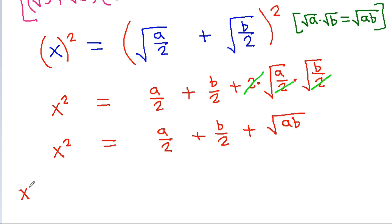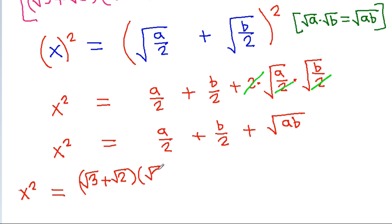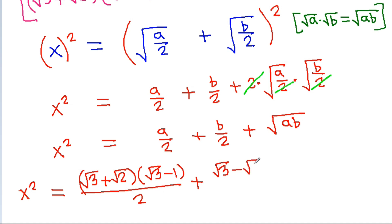So x squared is equal to: a is a square root of 3 plus a square root of 2 times a square root of 3 minus 1 by 2, plus b is a square root of 3 minus a square root of 2 times a square root of 3 minus 1.